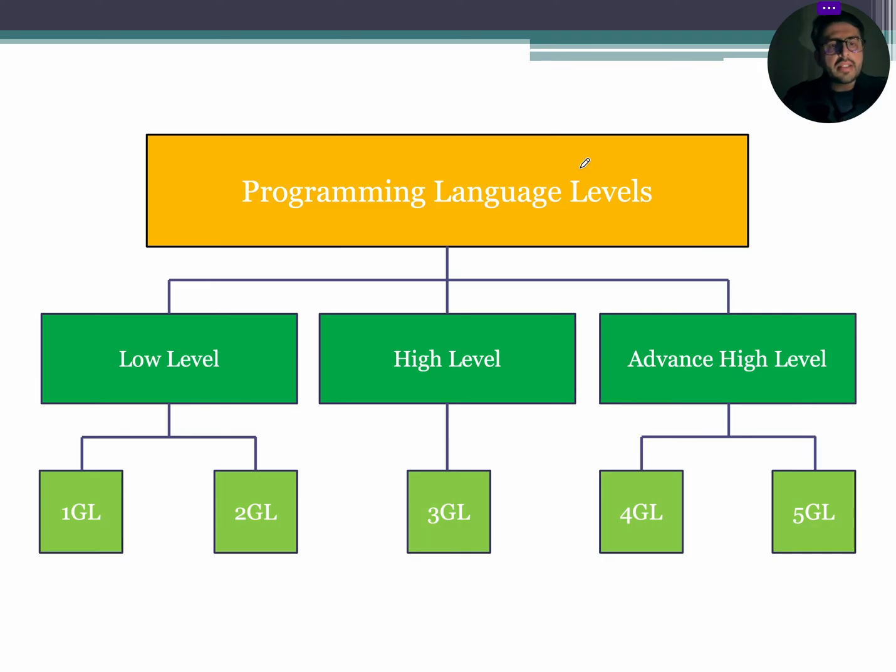Let's discuss this figure. In this figure, as you can see, these three categories that are low, high and advanced high language are further subcategorized into five different generation of languages. The term GL stands for generation language.